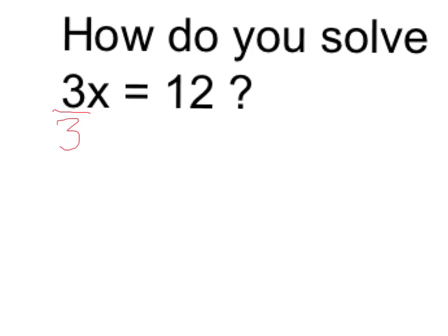The inverse of multiplying by 3 is dividing by 3, and what that does is it cancels out whatever number I have next to my x. So 3 divided by 3 is simply x.